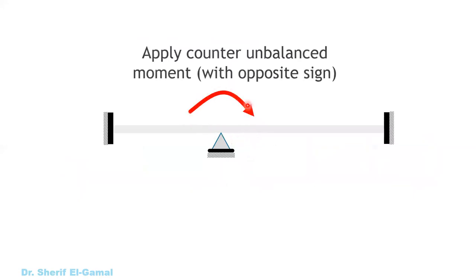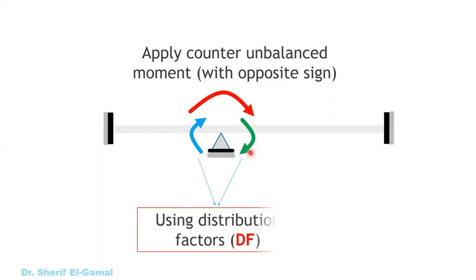We apply a moment equal to the unbalanced moment but in the opposite direction at the joint. This releases the joint and allows it to rotate. This applied moment is divided between the two spans — part on the left span and part on the right span. To divide this joint moment into two different moments, we use something called distribution factors.